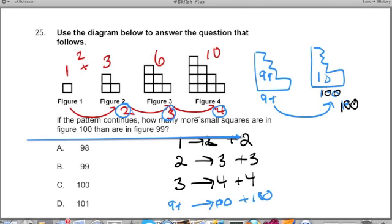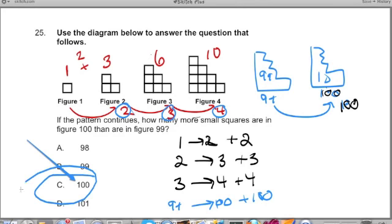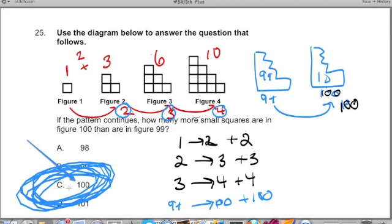From 1 to 2, I'm adding 2. From 2 to 3, I'm adding 3. From 3 to 4, I'm adding 4. From 99 to 100, I'm adding 100. The answer is C. Either way, both ways I want you to try. Either way is just as good.